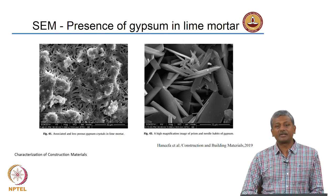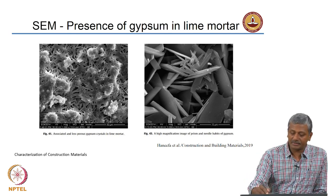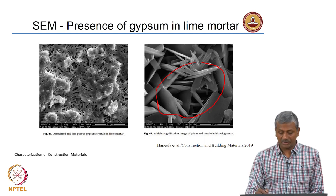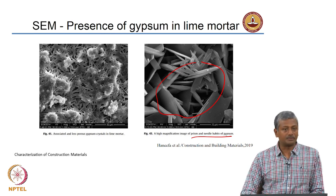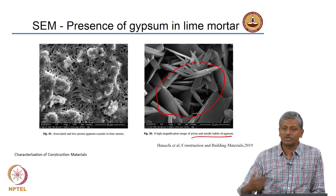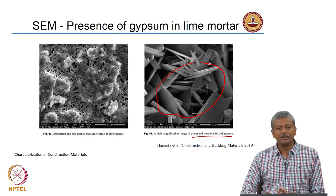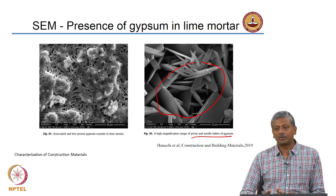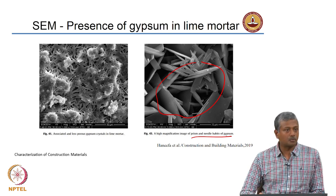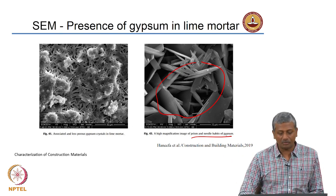SEM can also be applied to study heritage materials. In this SEM study of lime mortar from a heritage structure, well-defined crystals of gypsum — needles and prisms — were found forming in the lime mortar. Gypsum can form because external moisture or rain carries sulphates into the system, converting the lime present to gypsum. So gypsum deposition inside lime mortar can be due to acid rain or ground water seeping up with sulphates.